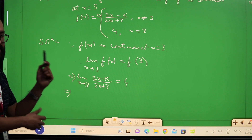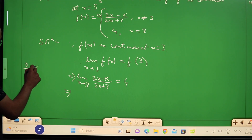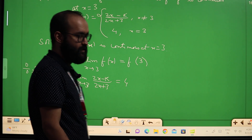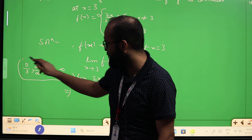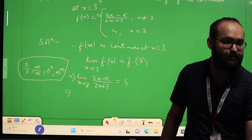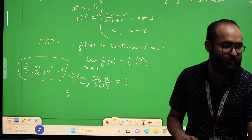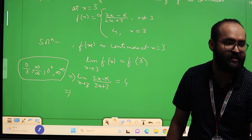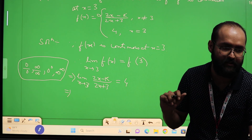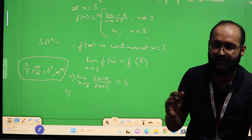Do you remember the indeterminate forms? While evaluating a limit, if the limit value comes out to be 0/0, infinity/infinity, 0⁰, or infinity^infinity — these are indeterminate forms. Indeterminate means the value cannot be determined. We have to apply specific rules from PUC1, like rationalization or factorization.